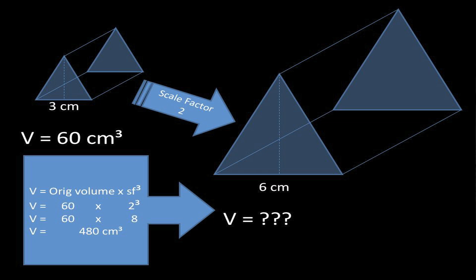In order to find the volume, we have to multiply the length, the width, and the height by two. So basically, you take the scale factor and cube it and multiply that times the original volume to find the new volume.